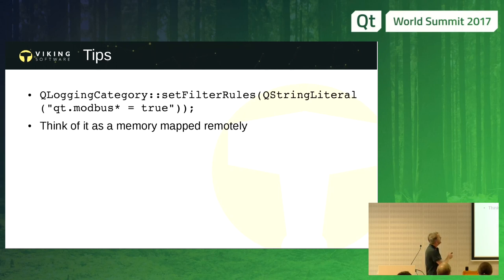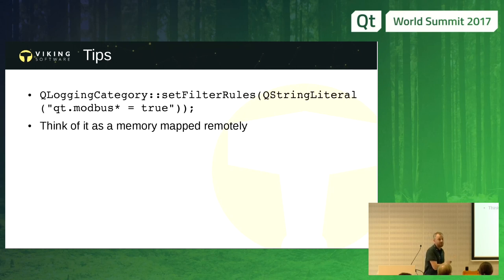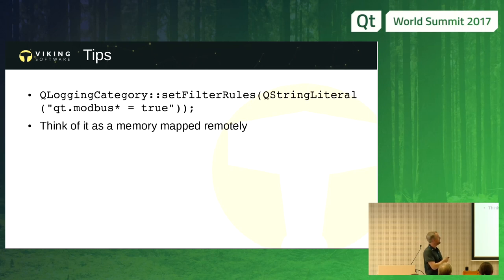A small tip: the logging category will log everything that happens on Modbus, but being polling by nature, a metric truckload of stuff happens on the Modbus. So be careful — you'll get flooded in your log. Turn it off when you don't need it, and think of everything as mapped memory.